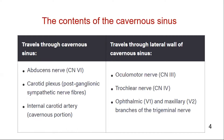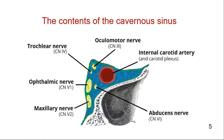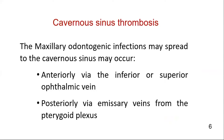These are the contents of the cavernous sinus. Within the lumen pass the horizontal segment of the internal carotid artery, the sympathetic plexus, and the sixth cranial nerve. In the outer layer of the lateral wall, the cranial nerves — oculomotor, trochlear, and the first and second branches of the trigeminal nerve — pass through it. The superior and inferior ophthalmic veins drain the orbital region, and it is via these veins that orbital abscesses may spread to the cavernous sinus.